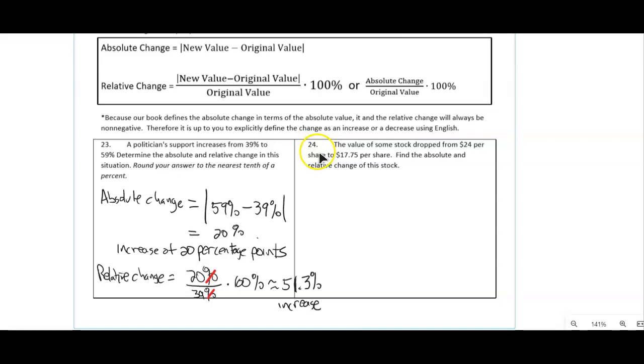Okay, pause the video and work on number 24. The answers to number 24 are a $6.25 per share decrease. Decrease. That's the absolute. And that's also a 26.04 percent decrease. That's the relative change. Then the absolute change, and the relative change.